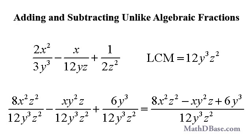Combining, we have 8x squared z squared minus xy squared z plus 6y cubed all over 12y cubed z squared.